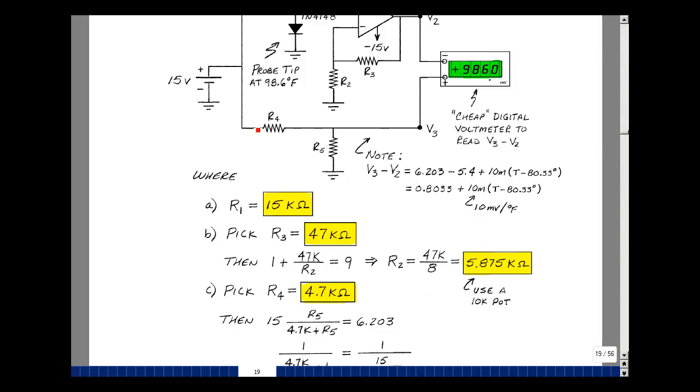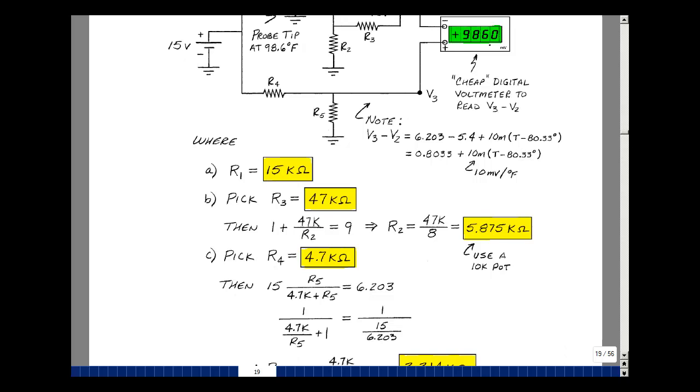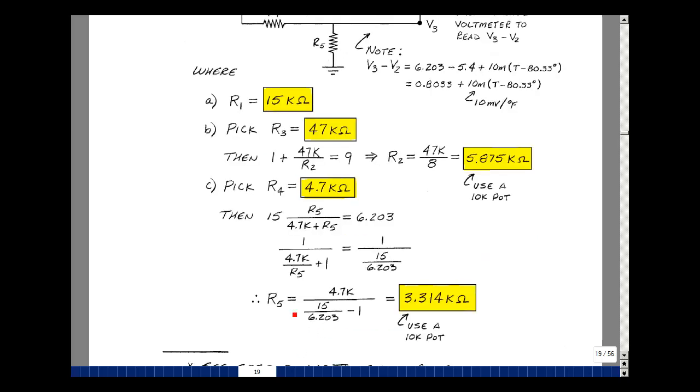I've got to pick R4 or R5 and solve for the other one. I'll use a 4.7k resistor. Again, you could pick anything between 1k and 1 meg. I'm going to have a voltage divider with 15 volts, resistor R5 and 4.7k, and I want that to equal 6.203. The resistors also vary with temperature. We're using the diode as a tip for probing temperature, but this could also be measuring room temperature. Because I have a ratio of resistors here, they'll be changing by the same percentage, so this won't change hardly at all with temperature. Taking the algebra and solving for R5, it'll have to be 3.314k, and I'll use a 10k pot to adjust this.